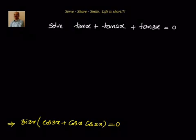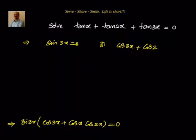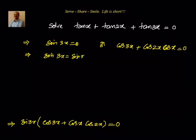The next step gives us sin 3x equal to 0, or cos 3x plus cos x cos 2x equal to 0. Taking sin 3x equal to 0, we can write sin 3x equal to sin of n pi, because sin is 0 for all multiples of pi. So 3x equal to n pi, giving x equal to n pi by 3. So one solution is x equal to n pi by 3.